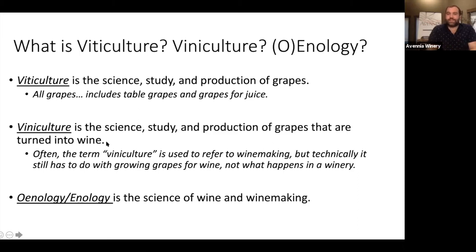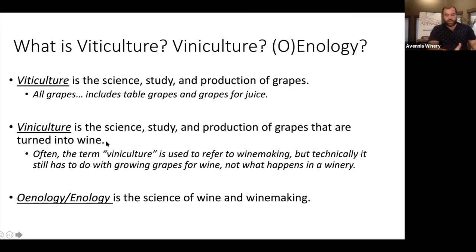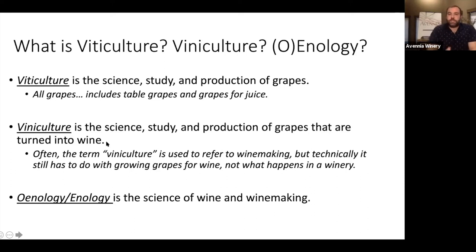Viniculture with an N is specifically the science, study, and production of grapes that are turned into wine. You'll often hear viniculture used to refer to winemaking. When I started studying wine, I referred to viticulture as grape growing and viniculture as winemaking, but technically that's not quite right. Enology — or oenology depending on how you spell it — is more about the science of actually making wine using grapes. I'll use viniculture as we move forward, though I might still say viticulture since it's ingrained in me.